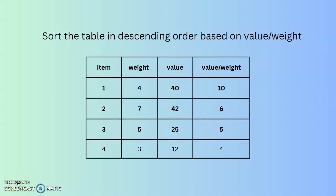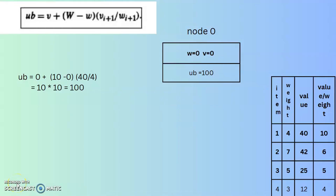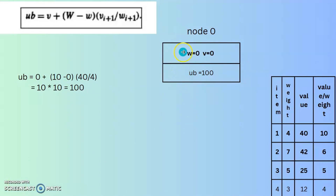The next step is to sort the table in descending order based on value-per-weight ratio. The item with the maximum value-per-weight is placed first, the next highest second, and so on. This is an important step in the branch and bound solution. Then create a root node — Node 0.